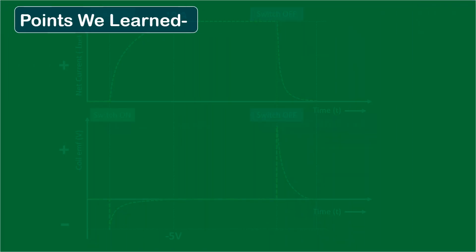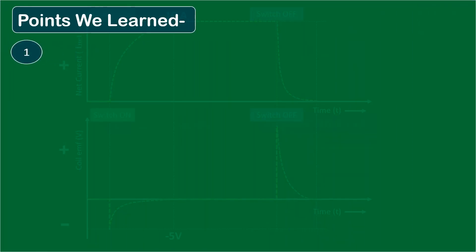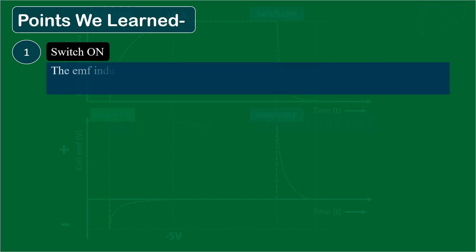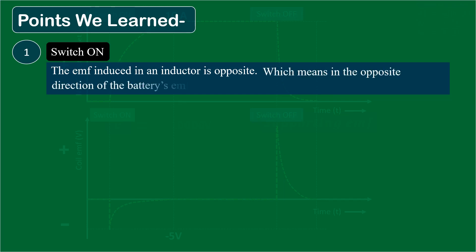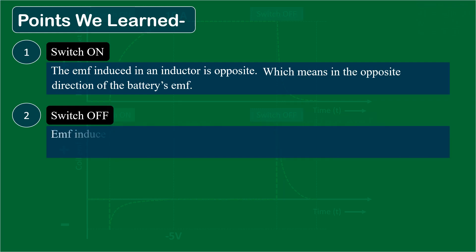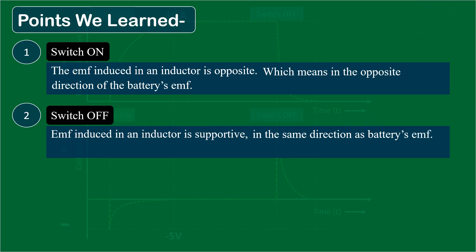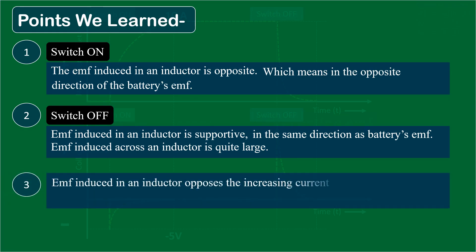Till now we have understood three key points. Number 1: when we switch ON, the EMF induced in an inductor is opposite — in the opposite direction of the battery's EMF. Number 2: when we switch OFF, the EMF induced in an inductor is supportive, in the same direction as the battery's EMF, and quite large. Number 3: EMF induced in an inductor opposes the increasing current and supports the dying current.